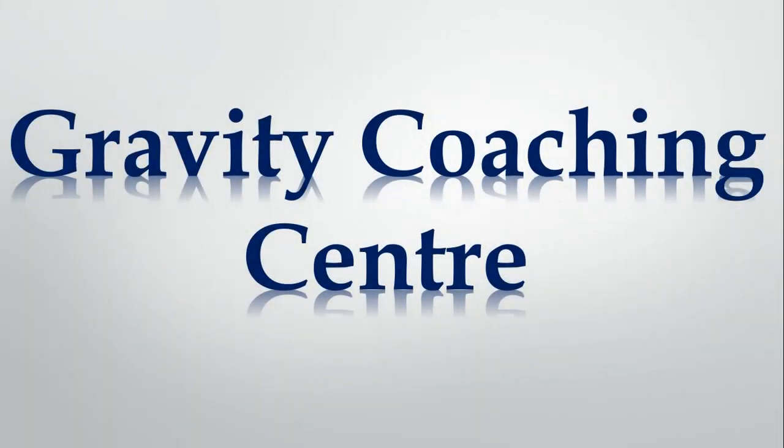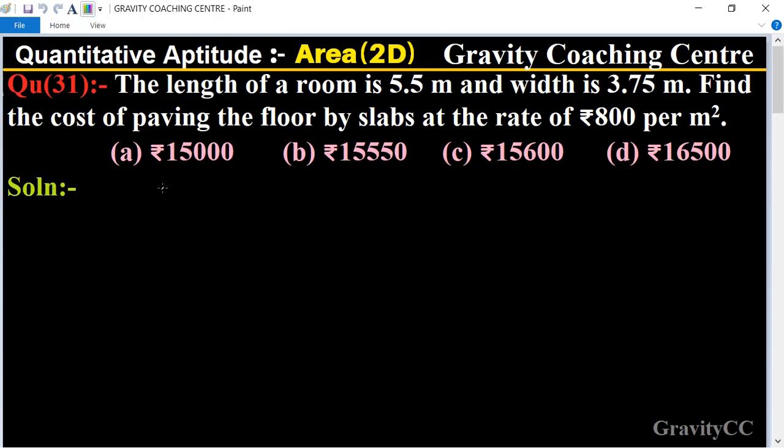Welcome to our channel, Gravity Coaching Centre. Quantitative Aptitude, Area. Question Number 31: The length of a room is 5.5 meters and width is 3.75 meters. Find the cost of paving the floor by slabs at the rate of ₹800 per square meter.